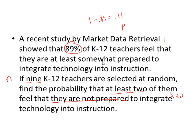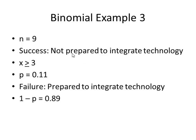Whenever the percentage doesn't match the success in the problem, you're going to have to go and look for the value of p. n was nine. The success is that they're not prepared to integrate technology. The failure is that they are prepared. We were given the probability of failure, 0.89. Our value of p is 0.11.